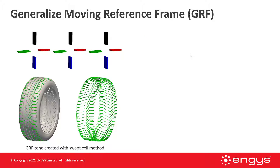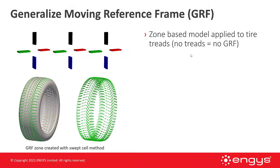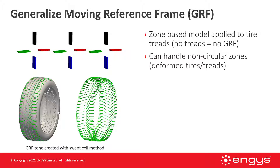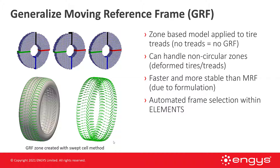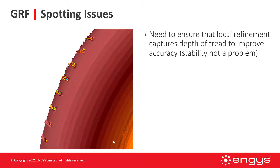For the generalized moving reference frame, GRF, it's a zone-based model applied to the tire treads themselves. If you don't have tire treads there's no GRF — so if we had a smooth tire, this is not going to work; we need a grooved tire. One of the main benefits of GRF is it can handle non-circular zones, meaning it can handle deformed tires and treads, and can capture the region underneath the tire with deformed treads. It's faster and more stable than MRF due to its formulation, and there's automated frame selection within Elements. However, we need to ensure local refinement captures the depth of the treads to improve accuracy.